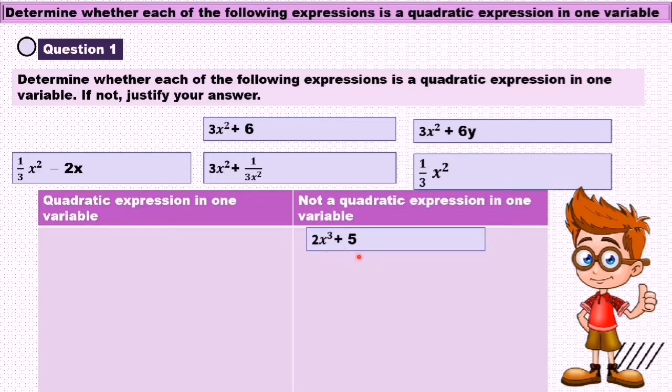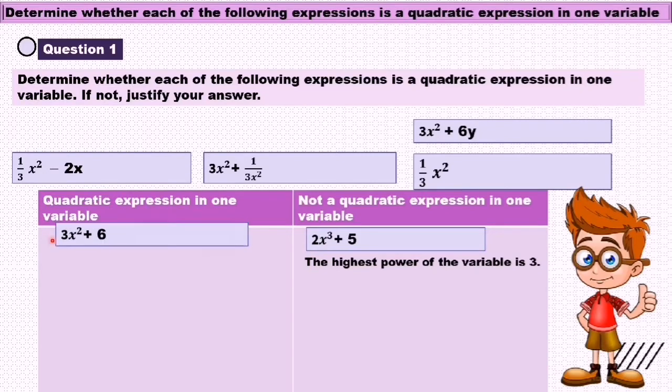2s³ + 5 is not a quadratic expression in one variable because the highest power of the variable is 3. So you can see s power of 3 here. 3s² + 6 is a quadratic expression in one variable because the highest power of the variable is 2.